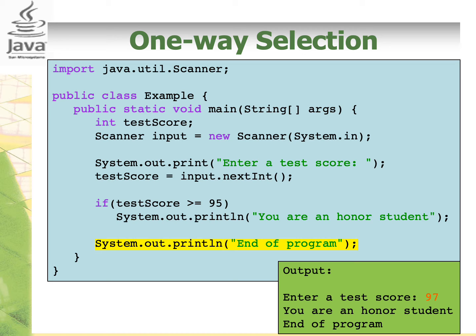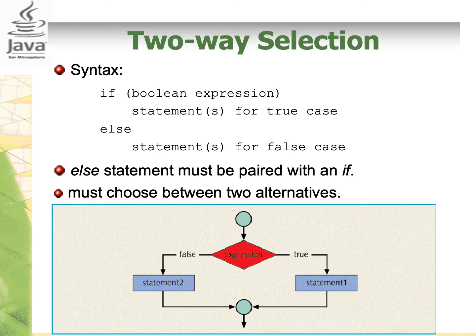Later on, we will see how we should write our if block if we have several statements that should be displayed only when the expression is true. What we have seen so far is only when we have one statement. Previously, we only had statements for the true case. If we want to do something else when the expression is false, we can use the if-else statement.